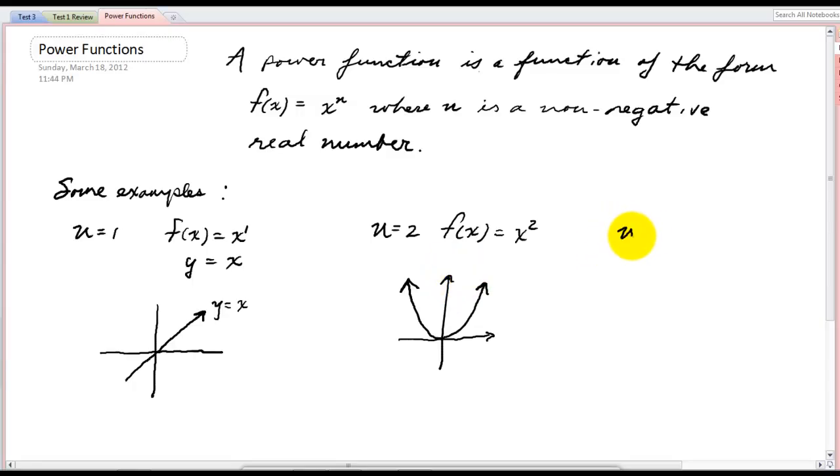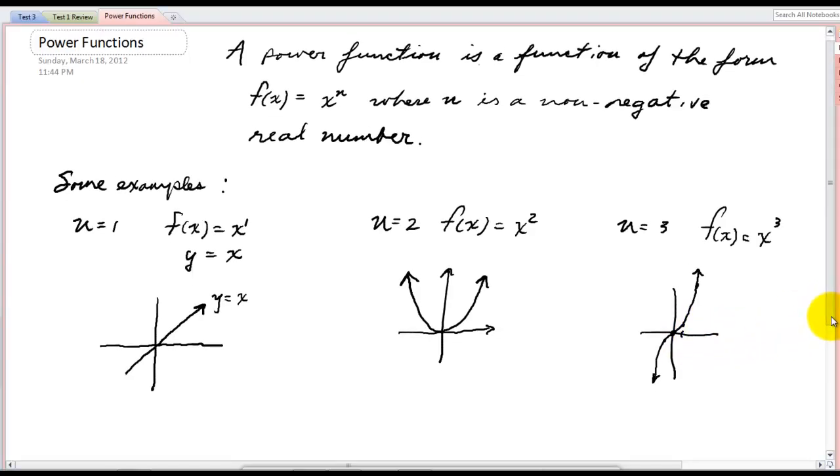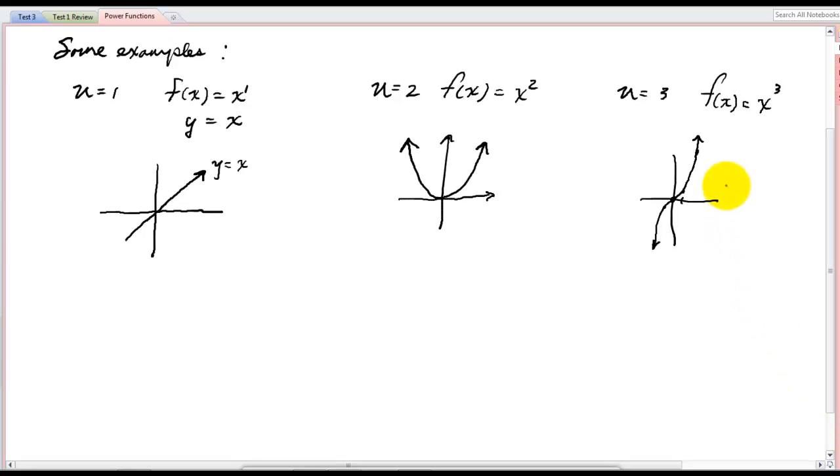We've also seen n equals 3, which would be f of x equals x cubed. That's our cubing function. It goes through 0,0, 1,1, 2,8, negative 1,1, negative 2, negative 8. And so we have something like this. When they're discussing power functions, they often restrict the domain to positive values of x, but we'll do that when it's necessary. So right now we'll consider things not just in quadrant 1, but over here also in quadrant 2, and over here also in quadrant 3.